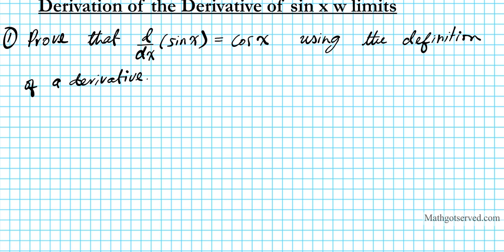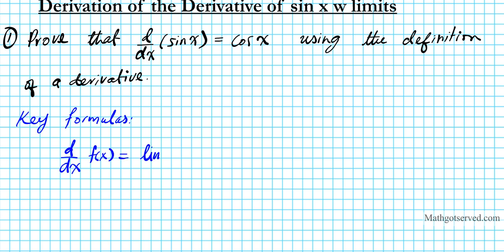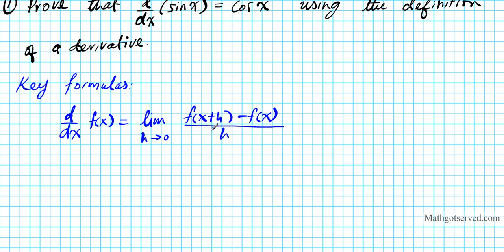Before we start the proof, I'm going to go over some key formulas or equations that are required in order for you to successfully execute this proof. The first one has to do with the limit definition of derivatives. The derivative of a function, d/dx of f(x), is basically equal to the limit as h approaches zero of f(x+h) minus f(x), divided by h.